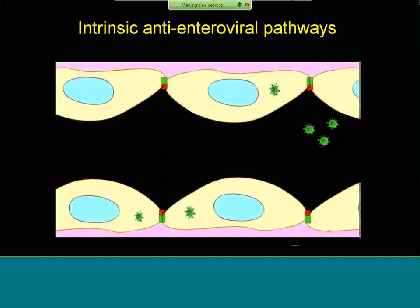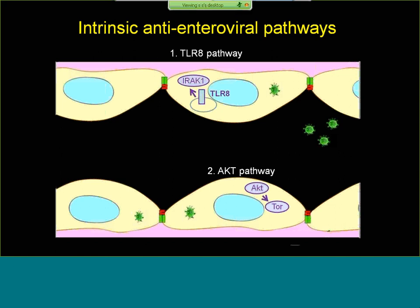Looking at what these genes that restricted both viruses were, they fell into pathways that further validate this approach. We identified TLR8 and IRAK1 as antiviral, as well as genes involved in the AKT pathway — AKT and TOR — and genes in the MAP kinase pathway, including MEK4 and ERK, suggesting these pathways are potently antiviral in polarized endothelial cells. We also tested these genes in other cell types and found they were restrictive in other human cell lines, suggesting these factors are broadly active regardless of cell type or particular viral species.